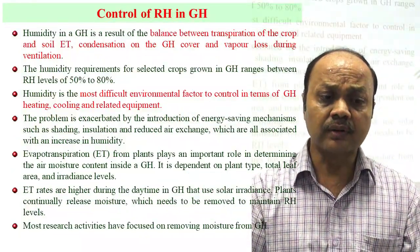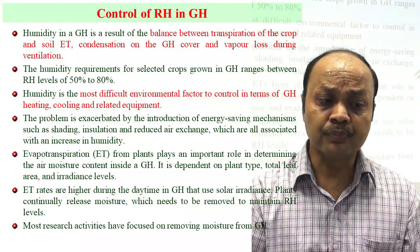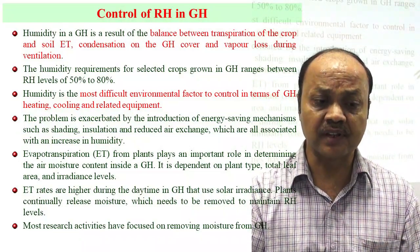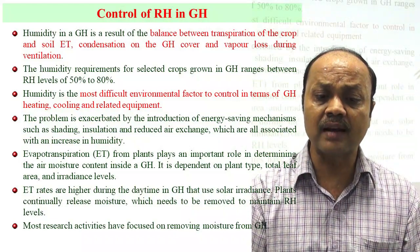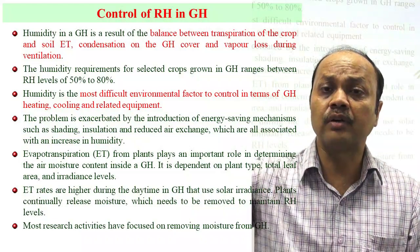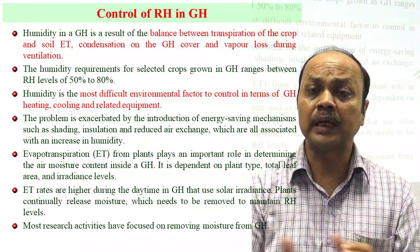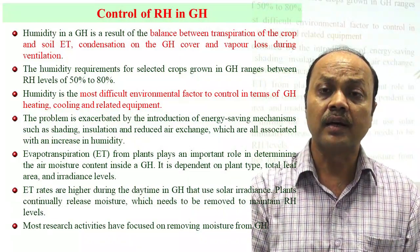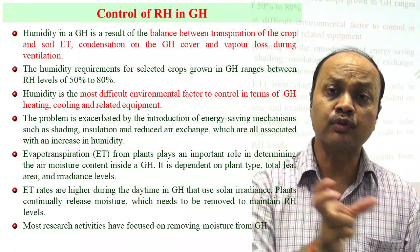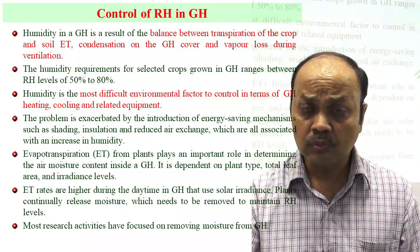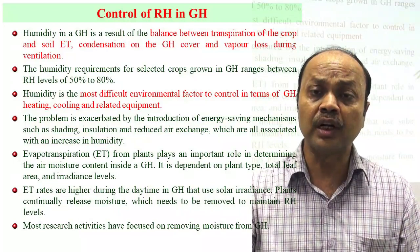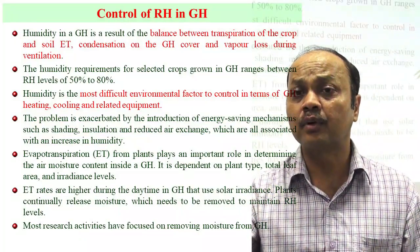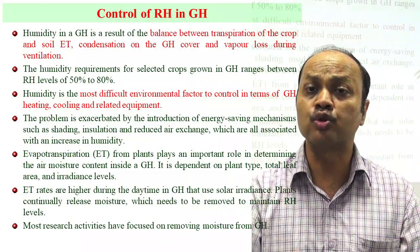Controlling RH in the greenhouse involves different factors. Humidity inside is the result of the balance between crop transpiration, soil evaporation, condensation on the greenhouse cover, and vapor loss due to ventilation. During summer, if ventilation is opened, outside air mixes in. During winter or rainy season, outside RH is very high, so it will affect inside RH depending on how the ventilation is closed.